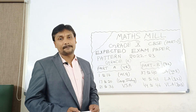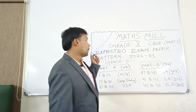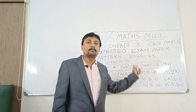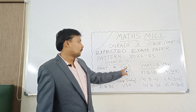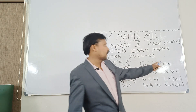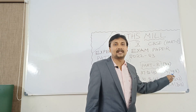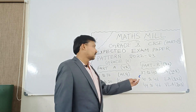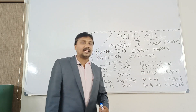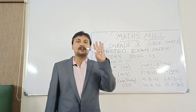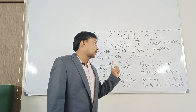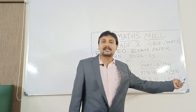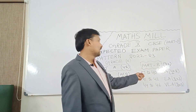Now we are moving to Part B. Out of 80 marks, Part A was 48 marks. Now we are going to cover the remaining 32 marks. In Part B, questions 37 to 40 — four questions — are short answer questions. Each question consists of 2 marks, so total it is 8 marks.